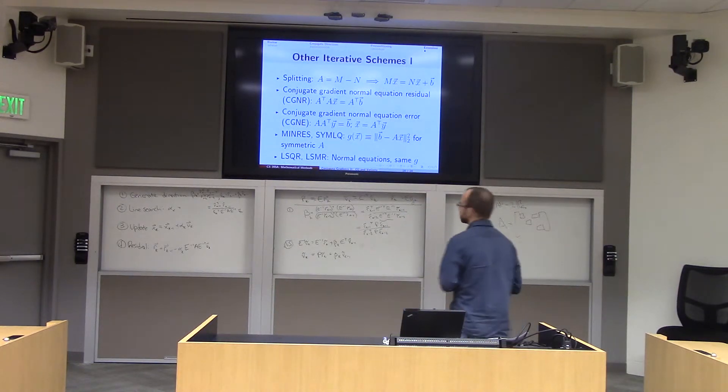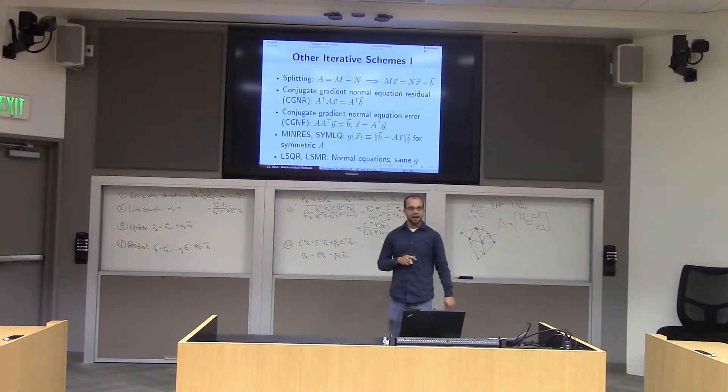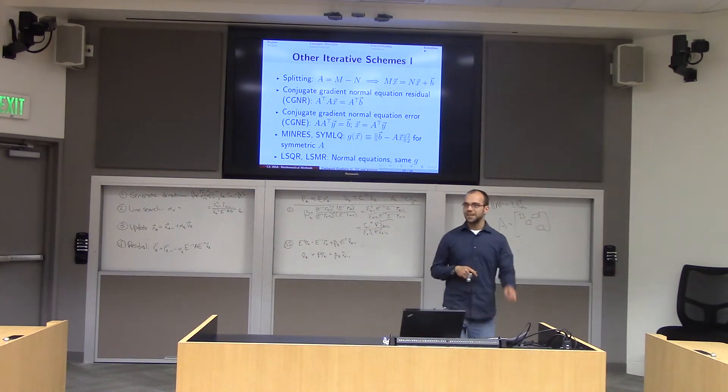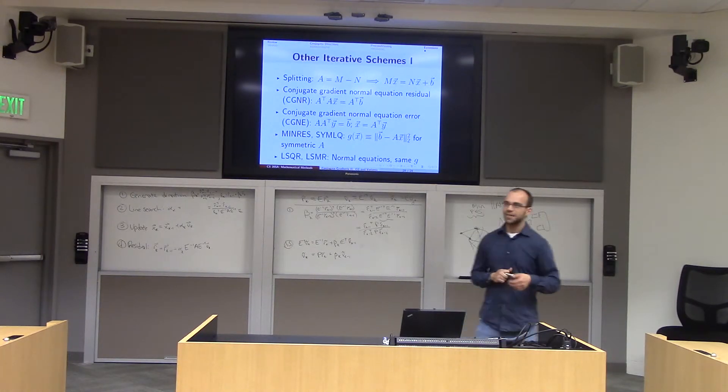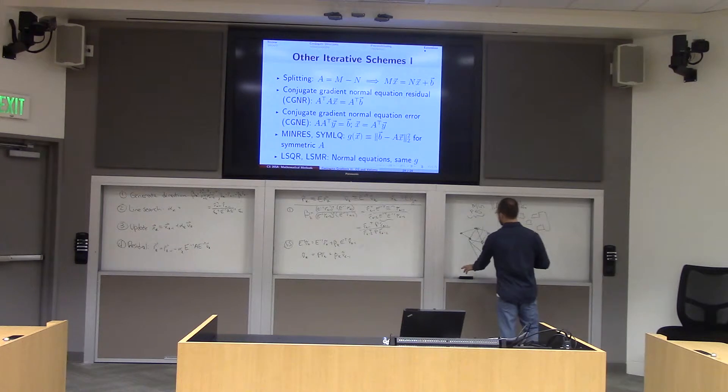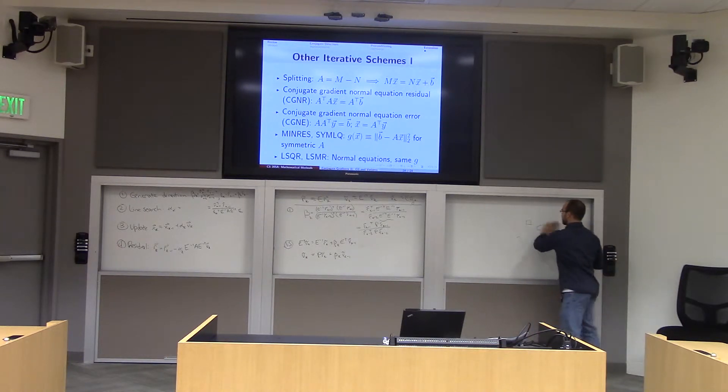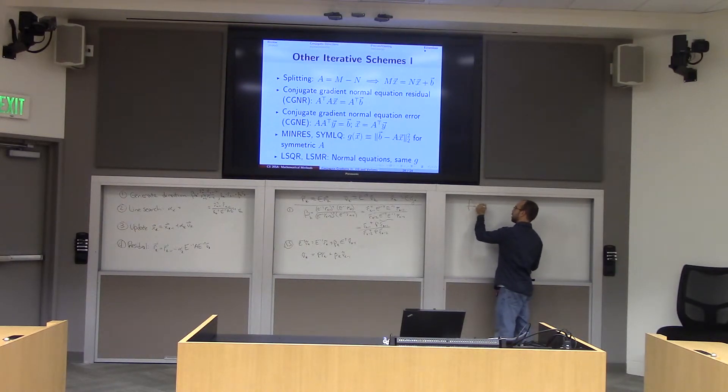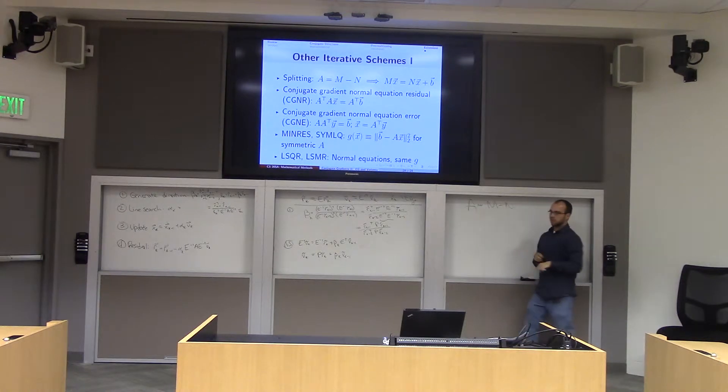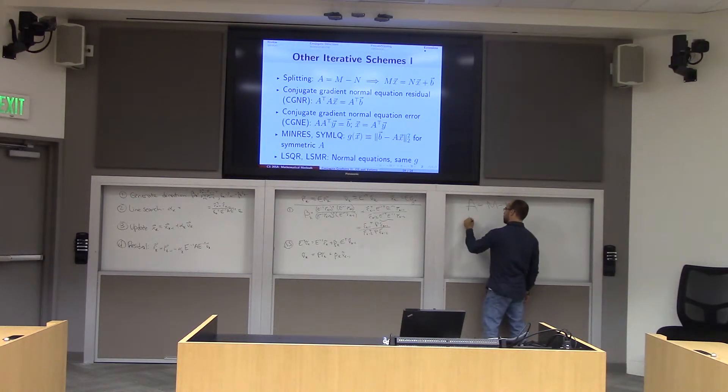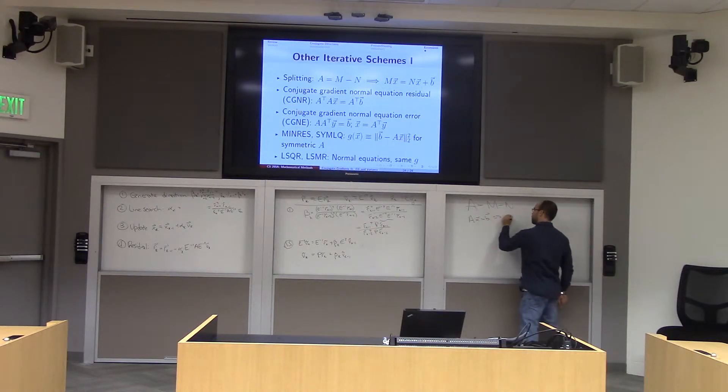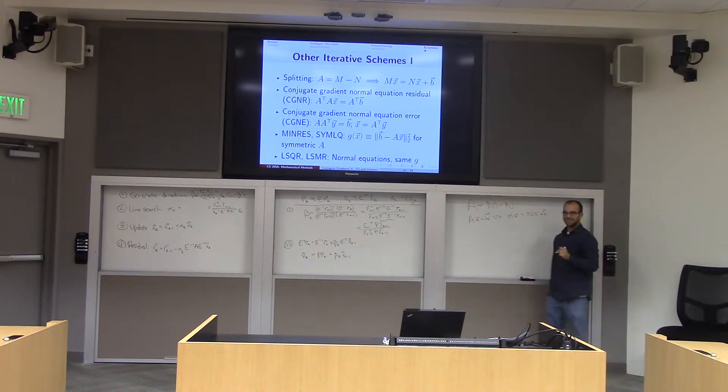Thankfully, this actually concludes this part of CS205. In the interest of completeness, I thought I would mention about four billion other iterative solvers. Obviously, you're not responsible for being able to derive any of these, and they get very complicated. So there is one strategy, which if I remember, I'll put on your next homework because it's easy. The idea here is that let's say that I decompose my matrix A into M minus N. I could always do this, for example, by taking M equals zero, but that would be kind of boring. And then I say, if I have AX equals B, that's the same as MX equals NX plus B.